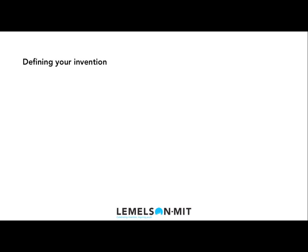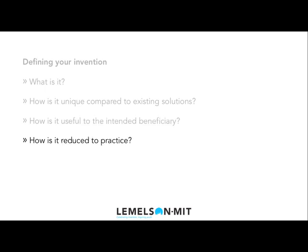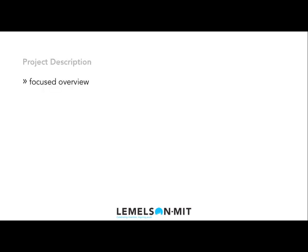Before I define the project description, keep these questions in mind that help you define your invention: What is it? How is it unique compared to existing solutions? How is it useful to the intended beneficiary? A project description is a focused overview of an invention. The description is short — at most around 10 sentences — and can be easily memorized by team members. It is used to communicate the very basic but important aspects of the invention with others that are not familiar with the project. The description should be modified throughout the project duration in order to accurately reflect the invention as it progresses through the iterative design, build, and test phases.